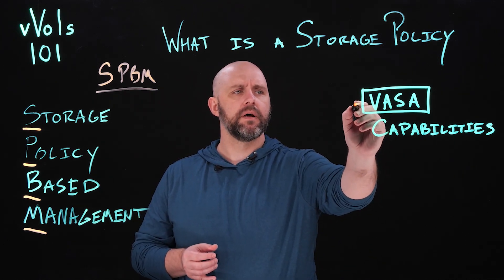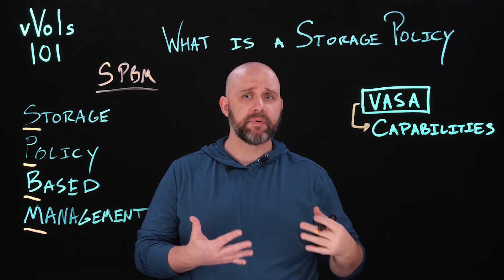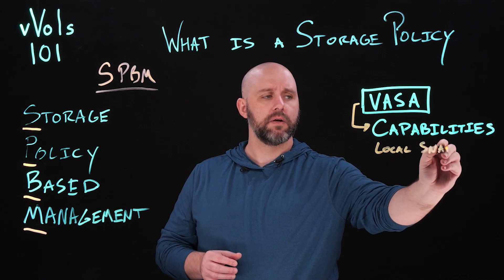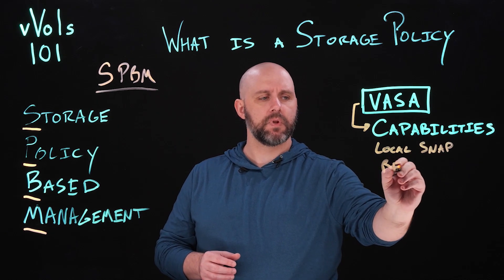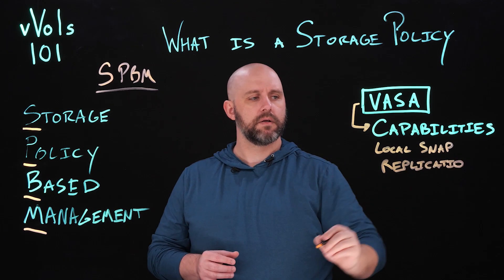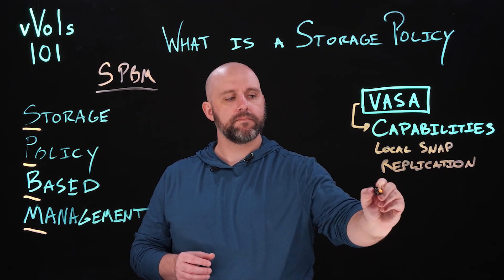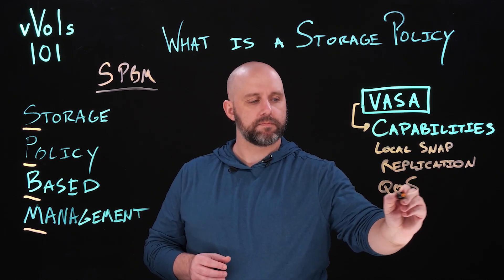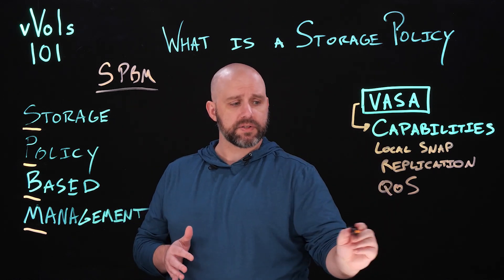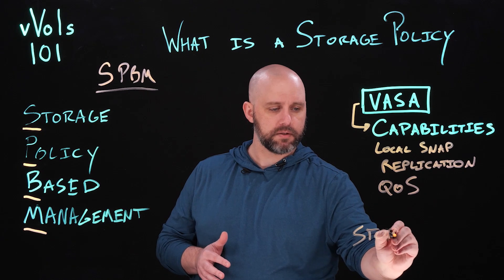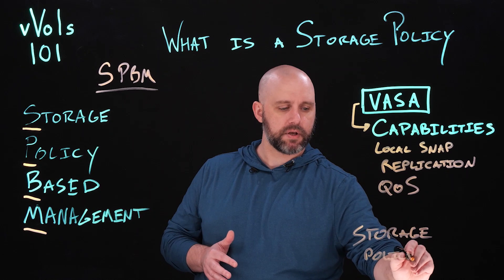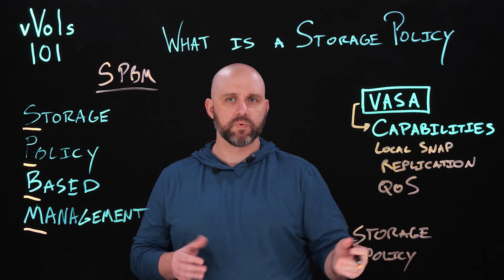So how does this look? VASA goes ahead and advertises those capabilities — whether that's something like local snapshots, replication, or something we've recently supported like QoS. This will allow end users to create a storage policy based off of some of these capabilities and create what are essentially rule sets.